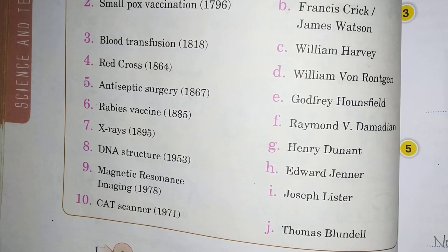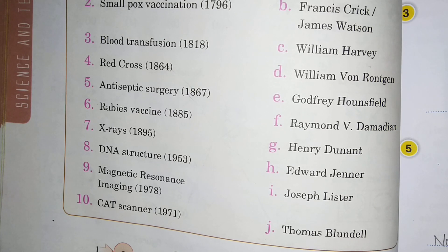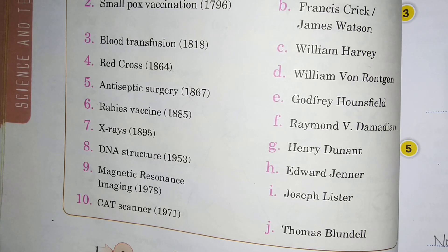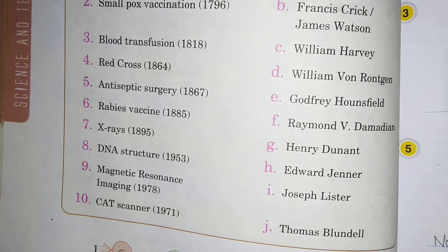Antiseptic surgery ko kis nai find out kya tha 1867 mein? That is option I, Joseph Lister.